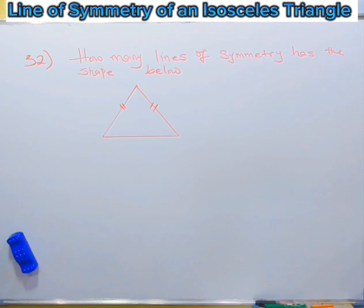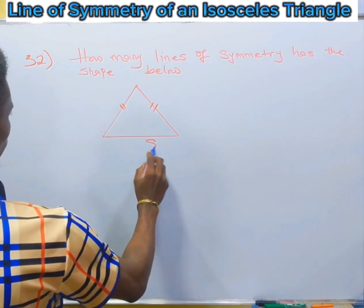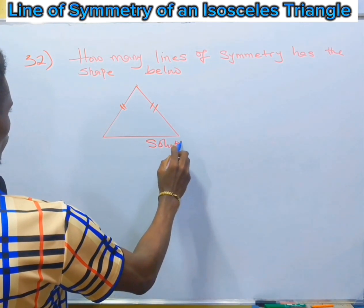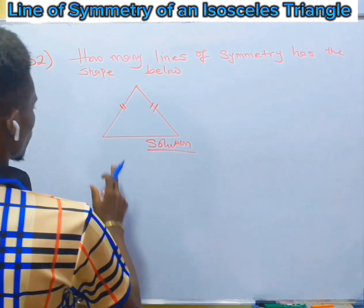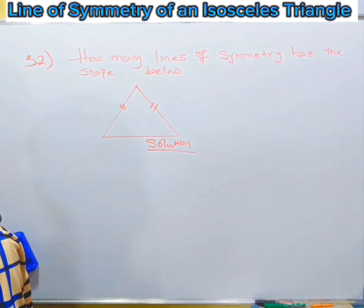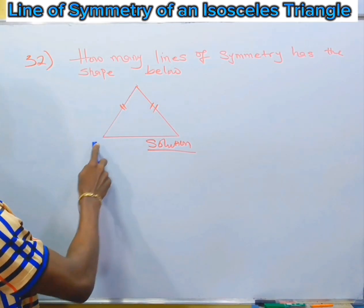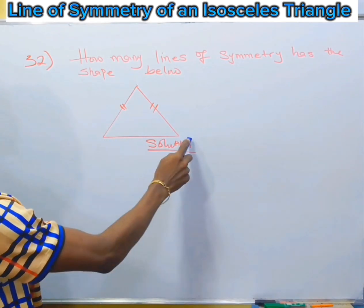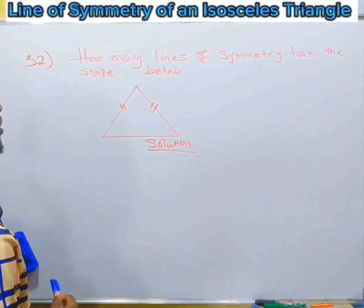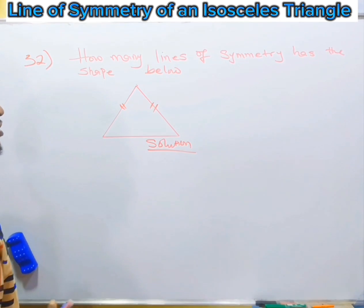How many lines of symmetry has the shape below? This is a triangle, because it is a polygon with three sides — side one, side two, and side three. So it's a polygon with three sides and we refer to it as a triangle.